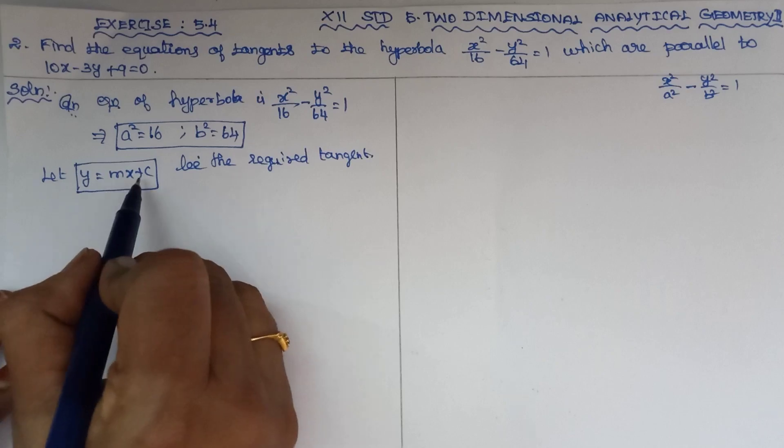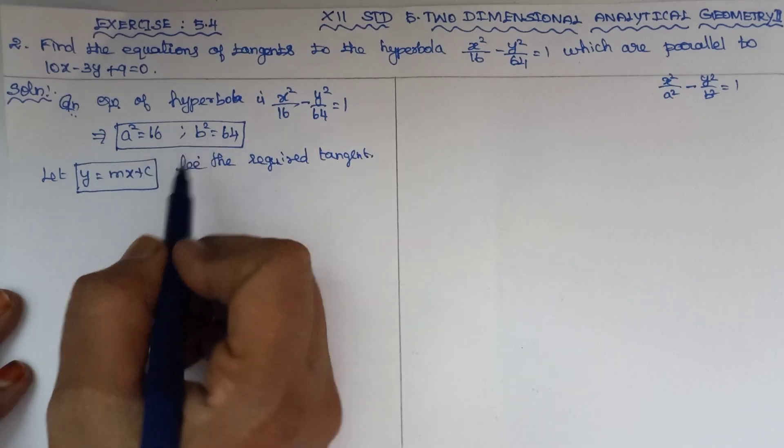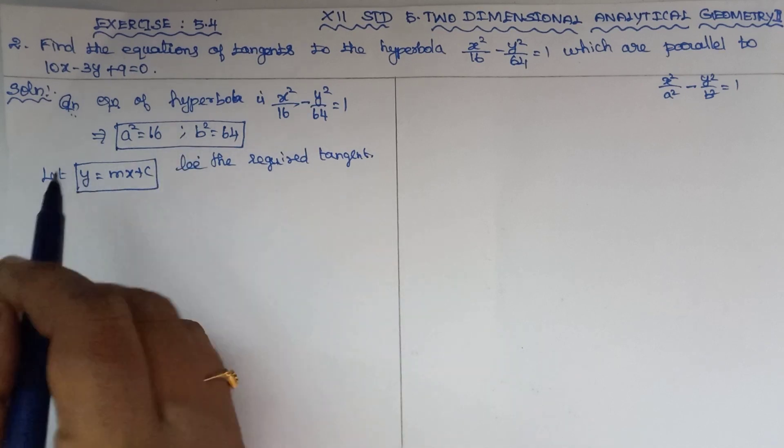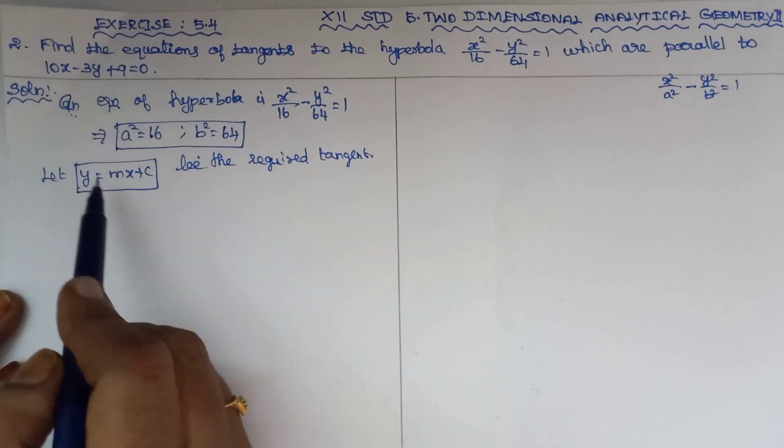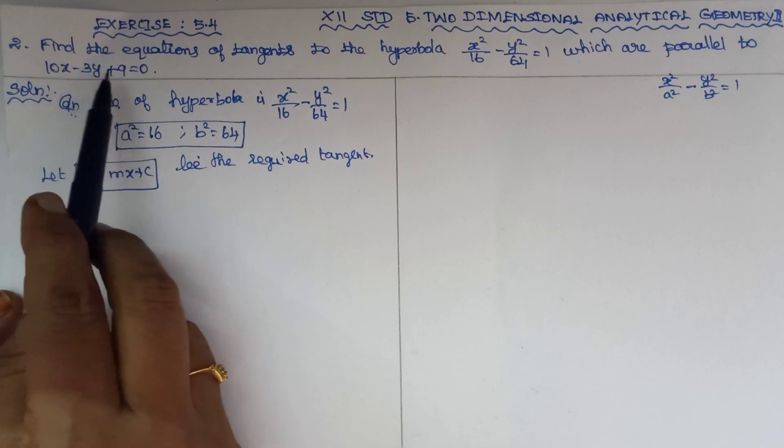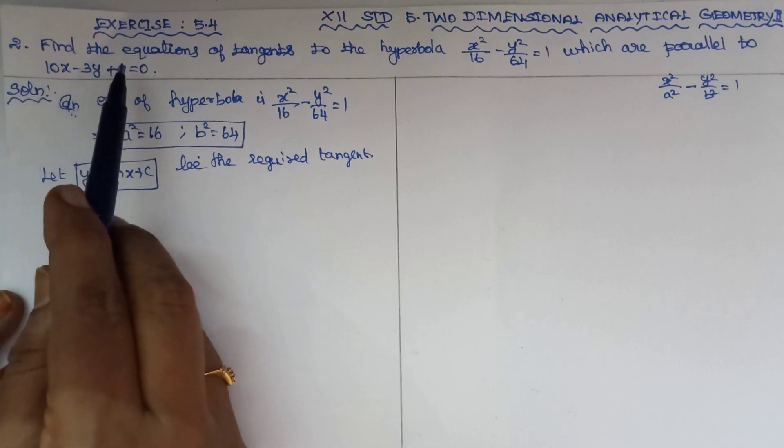We need to find the values of m and c. These values are centered on finding the tangents which are parallel to 10x minus 3y plus 9 equal to 0, which is a straight line.